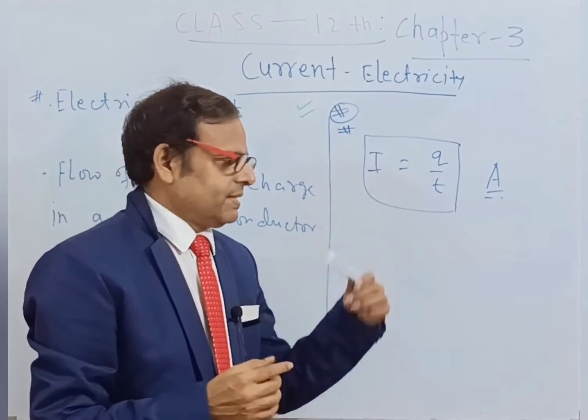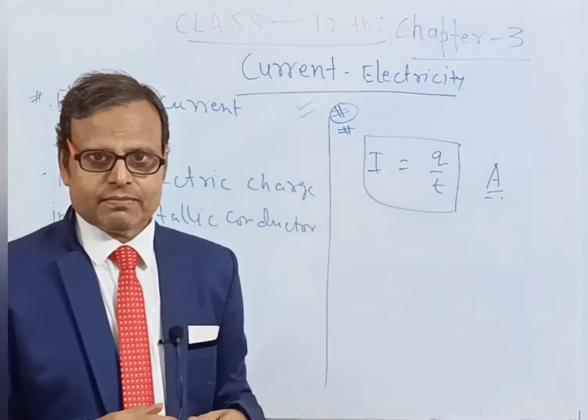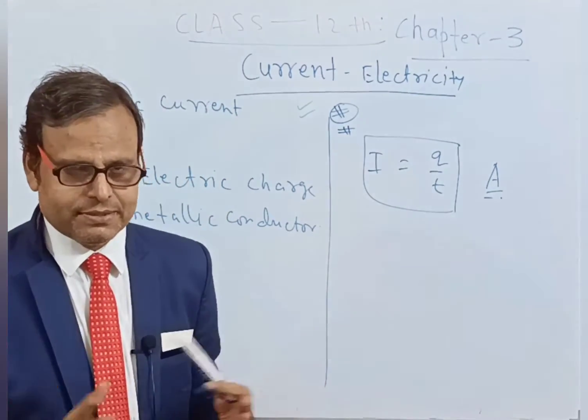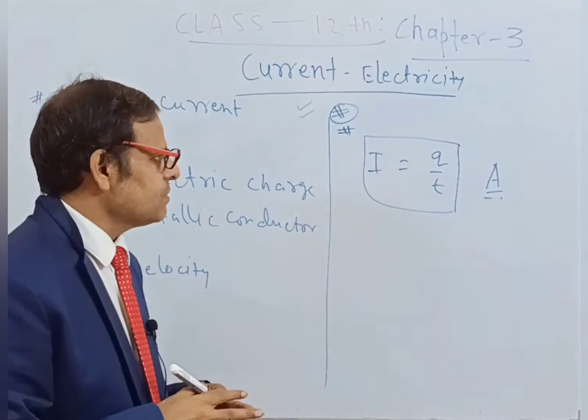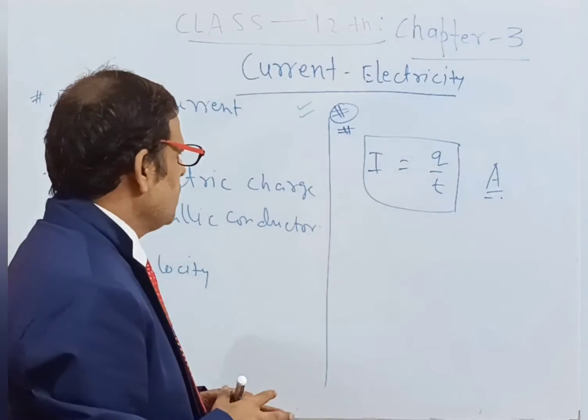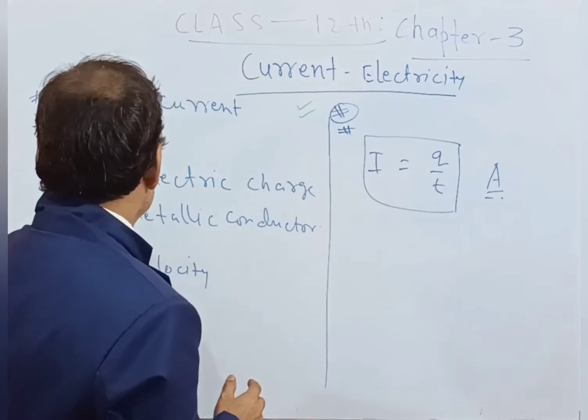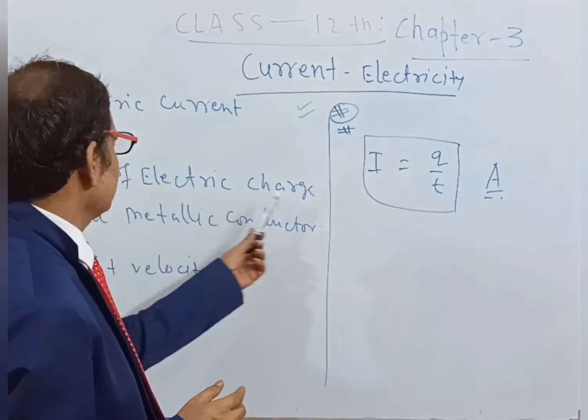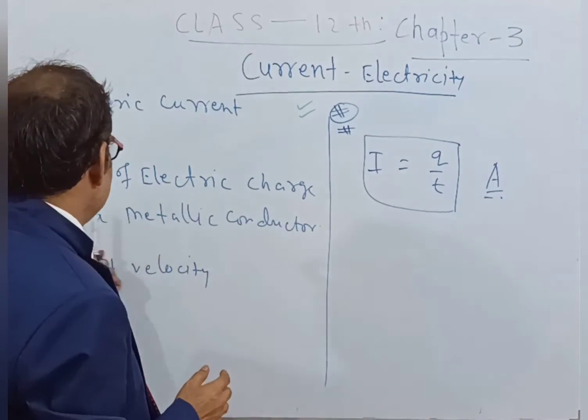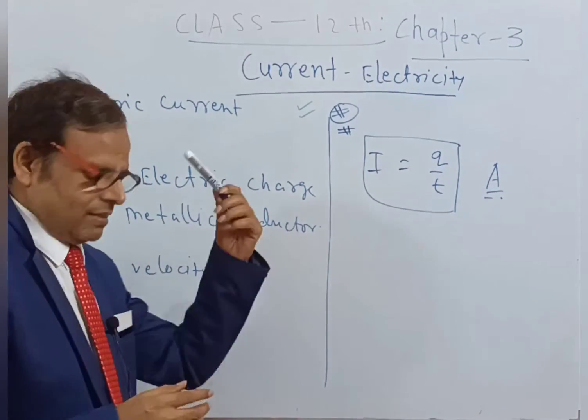The definition of electric current is I is equal to Q by T — the rate of flow of charge. The unit of current is the ampere.